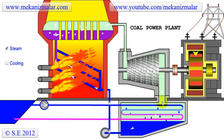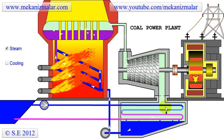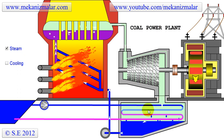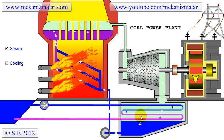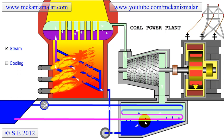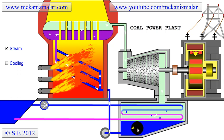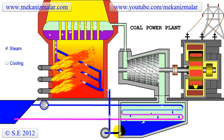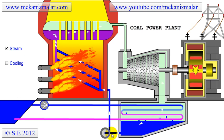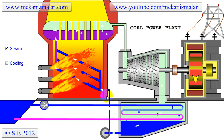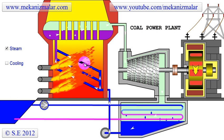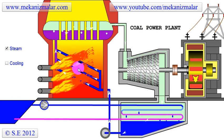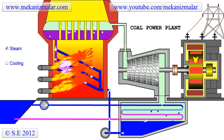This saturated dry steam then enters the condenser, where it is condensed to water by the cold water coming from the river. Finally, the condensed water is pumped back to the furnace, where it starts heating the coils inside the furnace to complete its cycle.